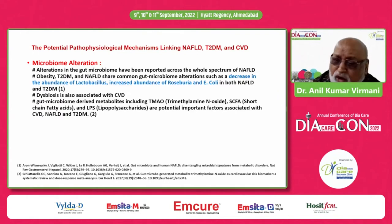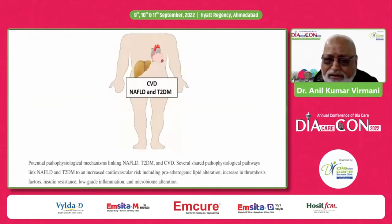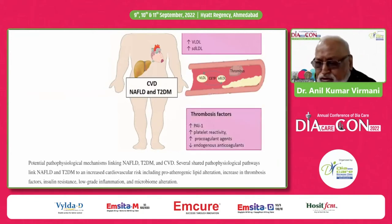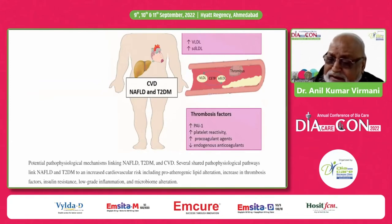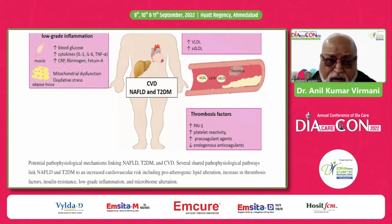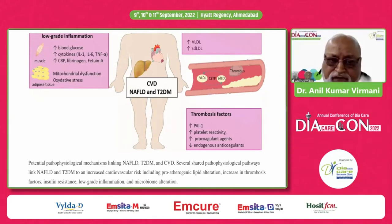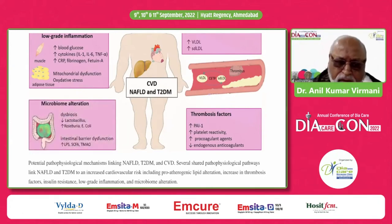Important factors include trimethylamine N-oxide and short-chain fatty acids. To summarize the pathogenesis: there is increased VLDL, increased small dense LDL, and increased CETP activity. Regarding thrombosis factors: increase in PAI-1, platelet reactivity, pro-coagulant agents, and decrease in endogenous anticoagulants. Low-grade inflammation, hyperglycemia per se, increased cytokines — interleukin-1, IL-6, and tumor necrosis factor alpha — increased CRP, fibrinogen, fetuin-A, mitochondrial dysfunction, oxidative stress, and microbiome alteration.